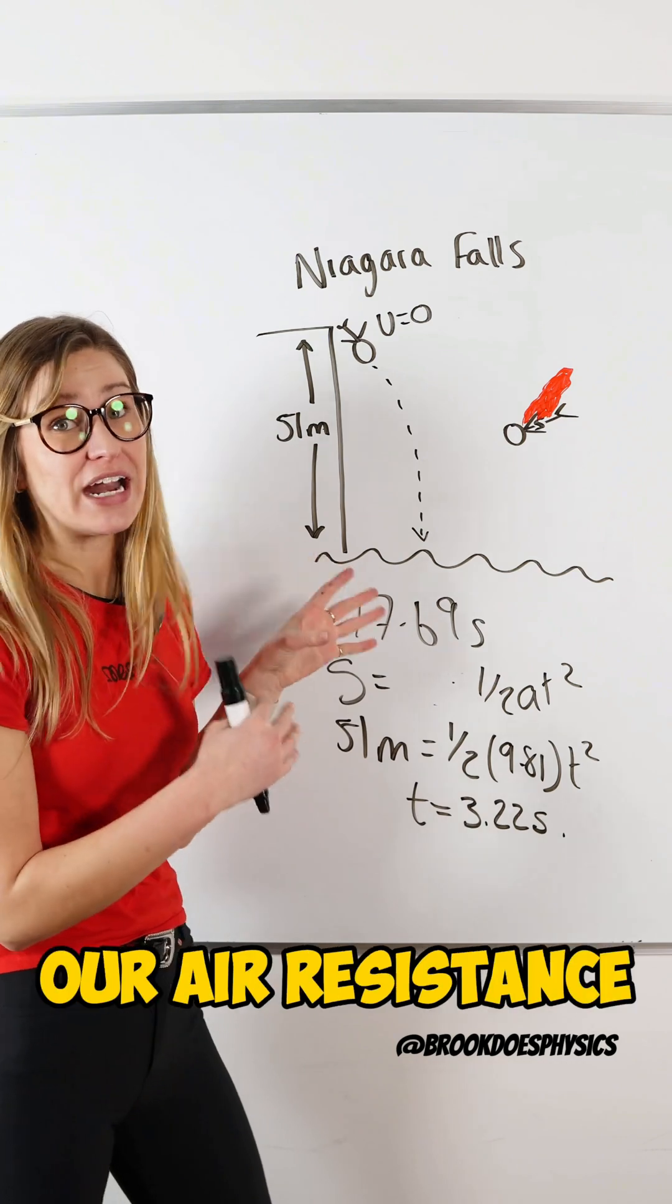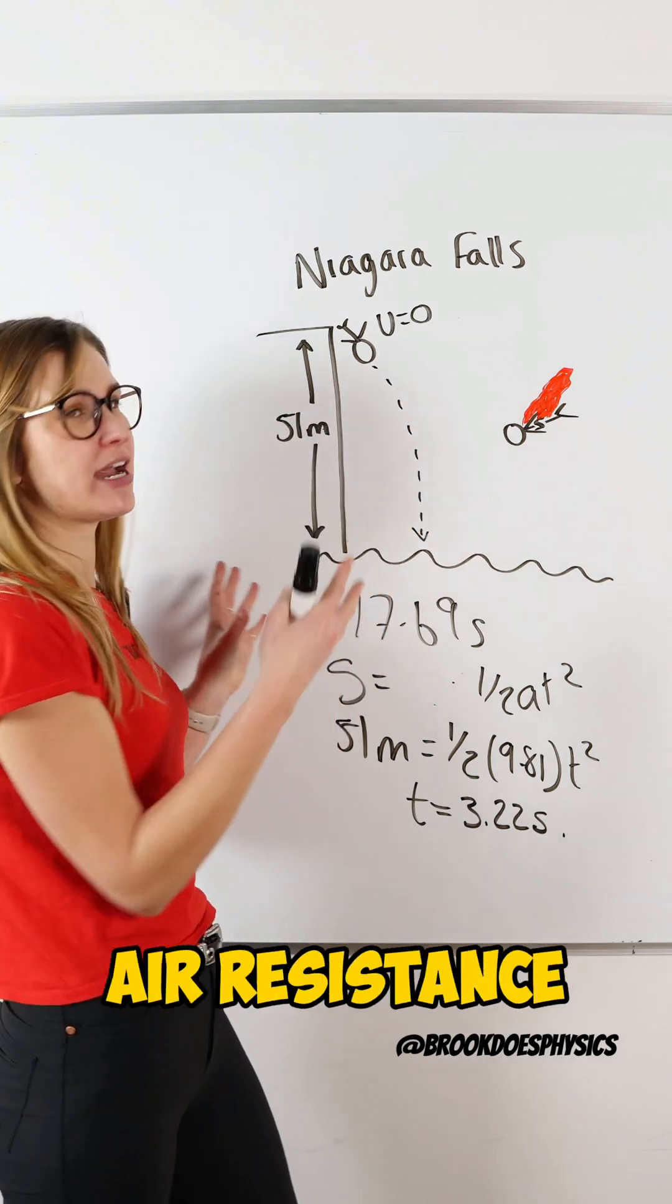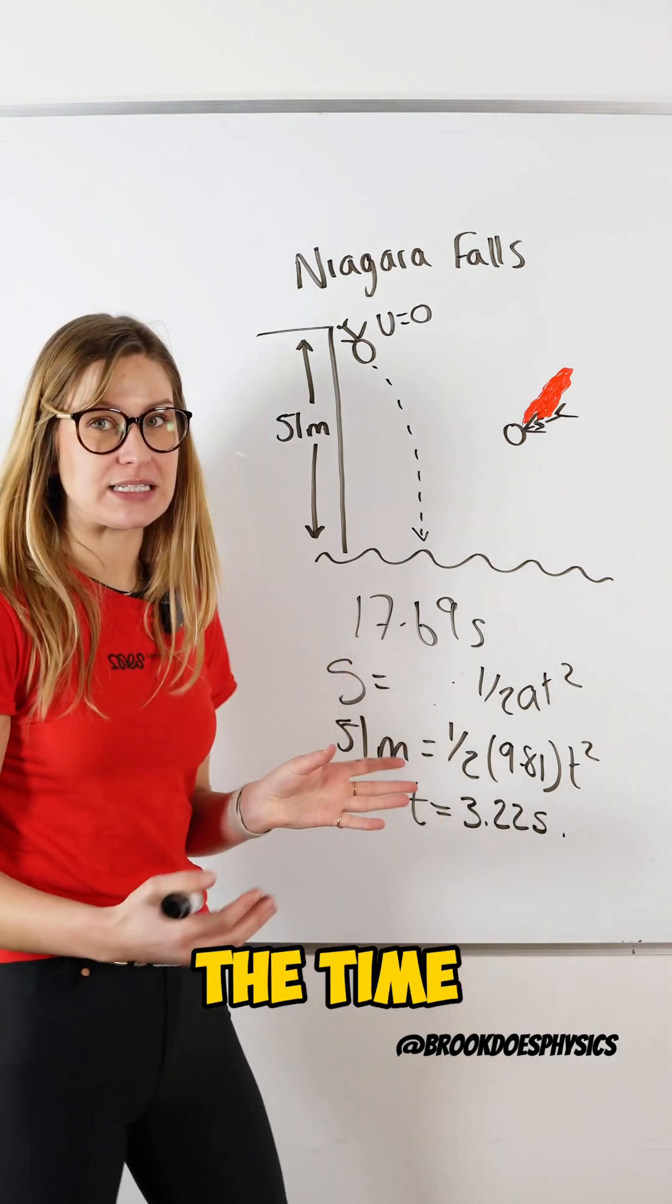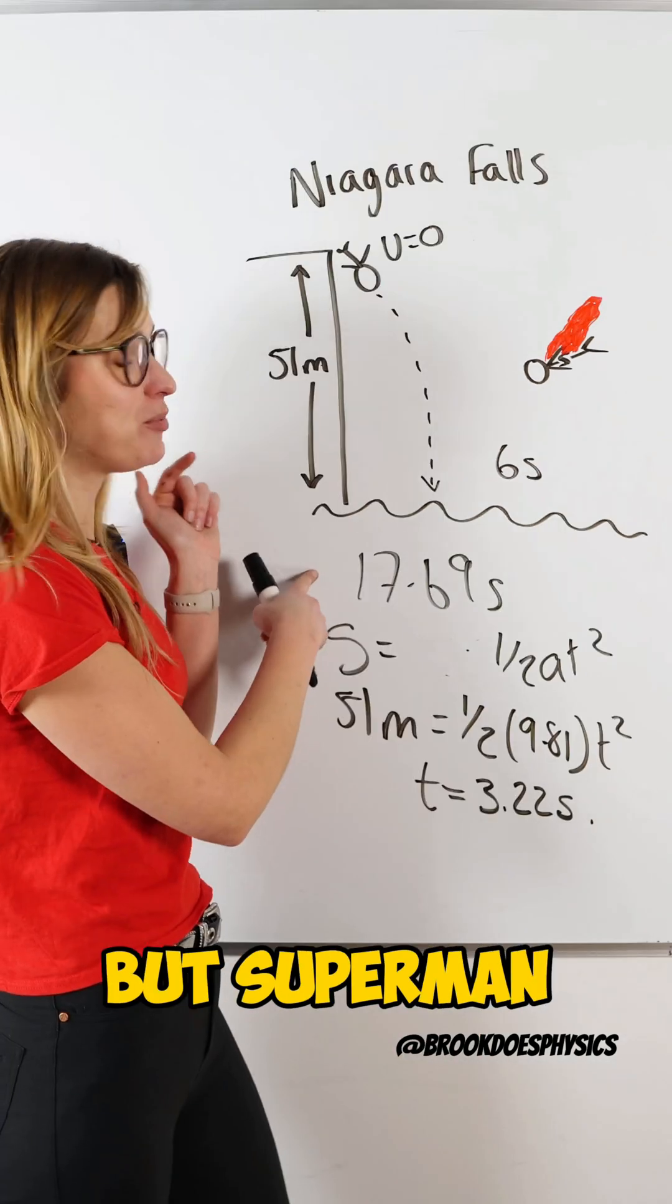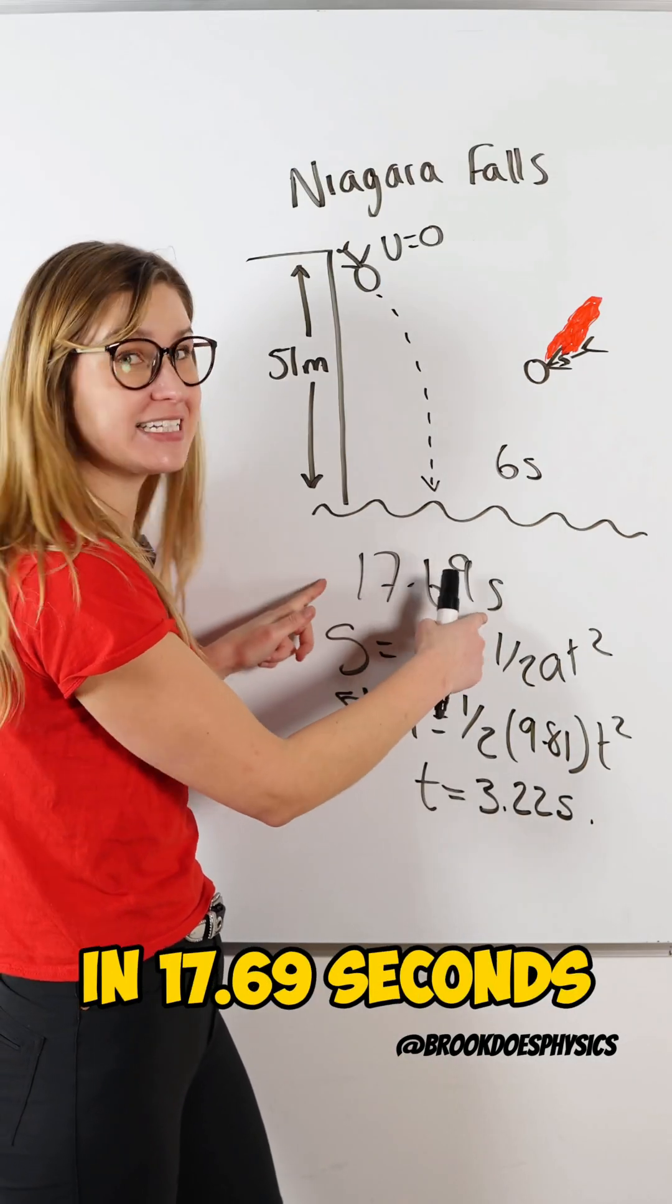But this is ignoring air resistance. If we included air resistance, the time roughly gets doubled. So the time from here to here would take about six seconds. But Superman only caught him in 17.69 seconds.